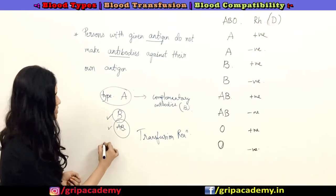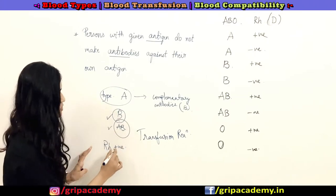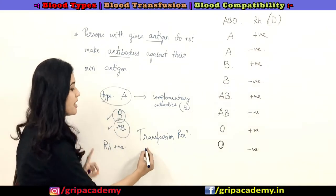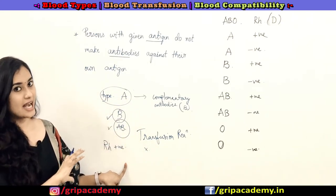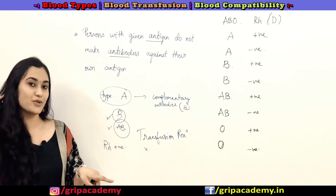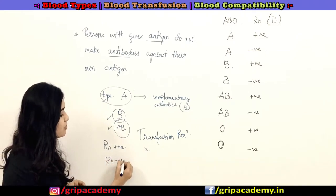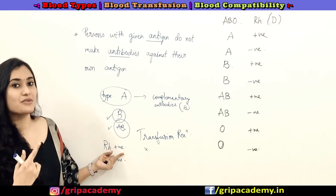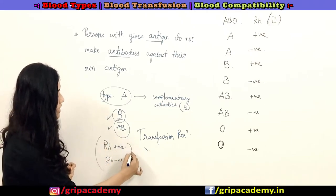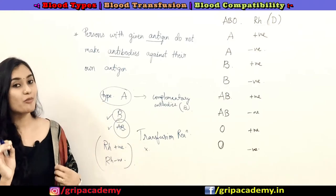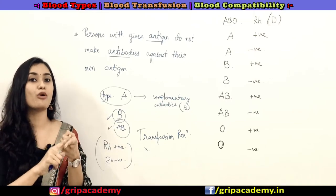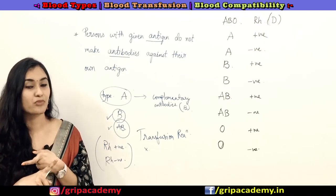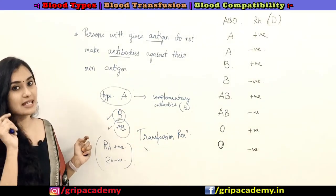The same principle applies for the Rh system. An Rh positive person has antigen D and will not produce antibodies against their own antigen D. But an Rh negative person can produce antibodies against Rh positive cells. That is why it is very important that people prefer giving A positive blood to A positive persons, and not A positive to A negative or vice versa.